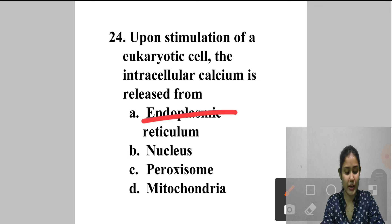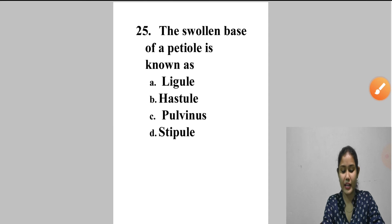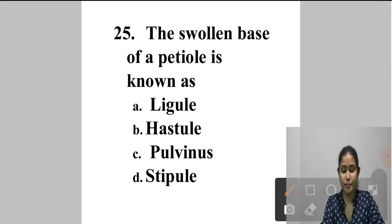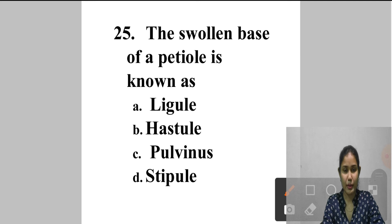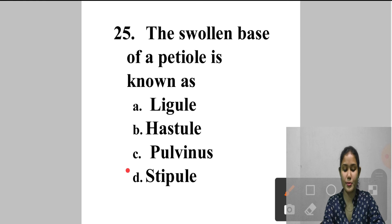Question 25: The swollen base of a petiole is known as — A. Ligule, B. Hasteule, C. Pulvinus, D. Stipule. The pulvinus consists of cells that can rapidly move water into or out of their vacuoles. Pulvini are found mainly in members of the family Leguminosae. The swollen base of a petiole is called the pulvinus. Answer is option C.